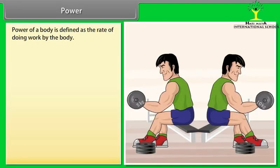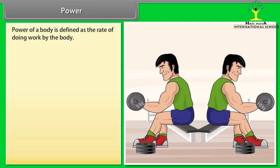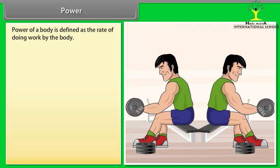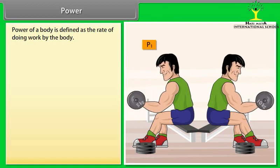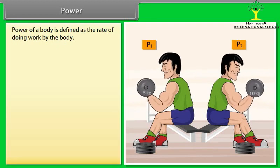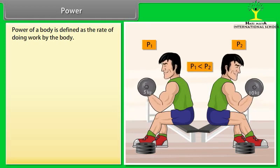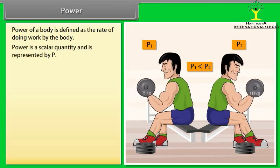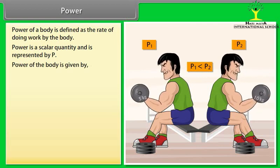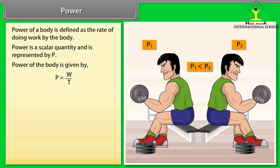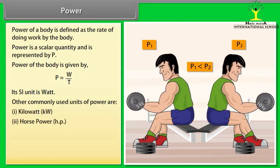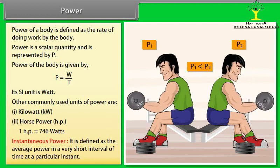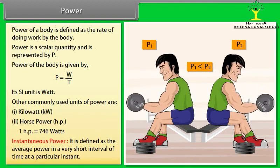Power. Power of a body is defined as the rate of doing work by the body. Let us take an example. A boy doing exercise by using dumbbell. When he used the dumbbell of 5 kg, then he applied power P1. And when he used the dumbbell of 10 kg, then he applied power P2. Hence, the power rating is high when he used the dumbbell of 10 kg as compared to the dumbbell of 5 kg. Power is a scalar quantity and is represented by P. Power of a body is given by P = W/T. Its SI unit is watt. Other commonly used units of power are kilowatt and horsepower. One horsepower equals 746 watts. Instantaneous power: It is defined as the average power in a very short interval of time at a particular instant.